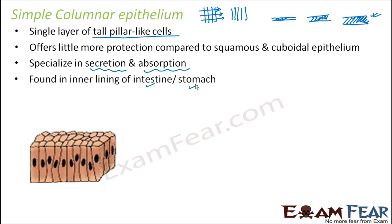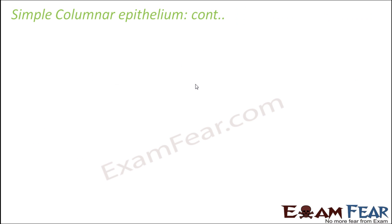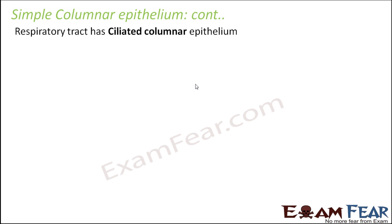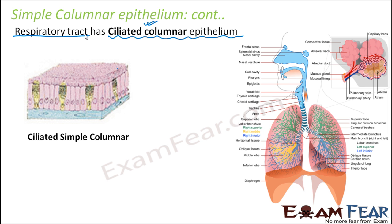There is another modified form of simple columnar epithelium. The additional modification is that they have cilia attached to them. Cilia are thin hair-like structures present on the surface of the epithelium. The movement of these cilia helps to move other things along with it. This type of columnar epithelium with cilia is known as ciliated columnar epithelium, and we can find this type in the respiratory tract of human beings.